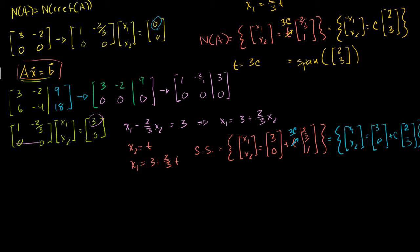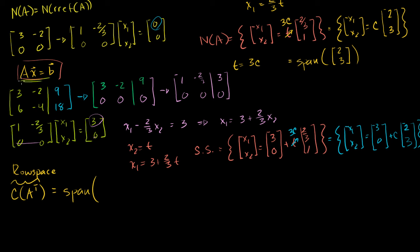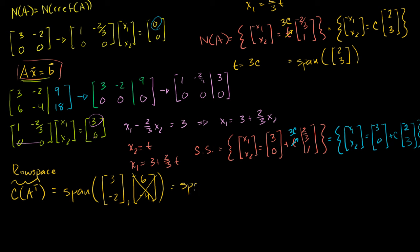One other thing of interest — because it's the orthogonal complement to the null space, relating to what we did in the last video — is the row space of A. The row space of A is just the column space of A transpose. It equals the span of the row vectors of A: 3, minus 2 and 6, minus 4. But the second row is just 2 times the first, so we can ignore it. The row space is just the span of the vector 3, minus 2.